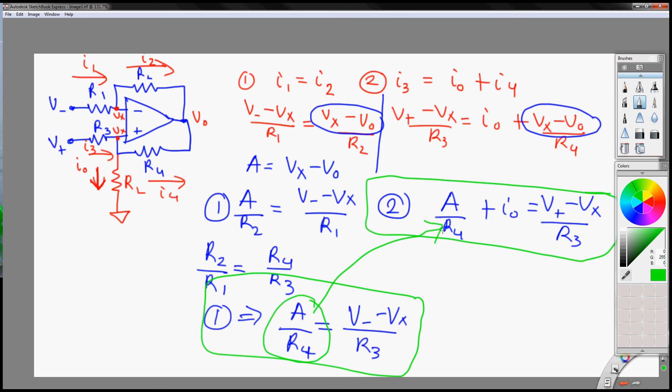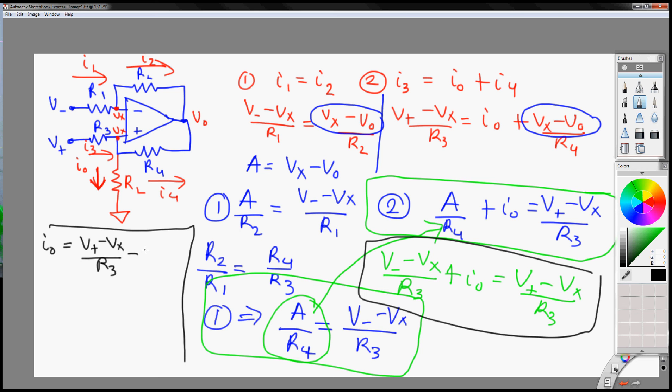So when you substitute in for A over R4, to this second equation, you have V minus minus Vx over R3, plus I0, equal to V plus minus Vx over R3. And this will cancel out the Vx, and that will leave you with V plus minus V minus over R3.